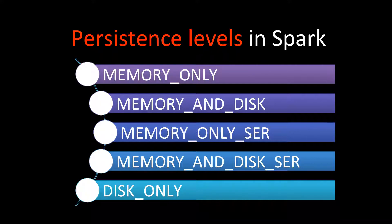Different persistence levels in Apache Spark are: memory only, memory and disk, memory only SER, memory and disk SER, and disk only. SER stands for serialization. Let's see what each of these means in detail.